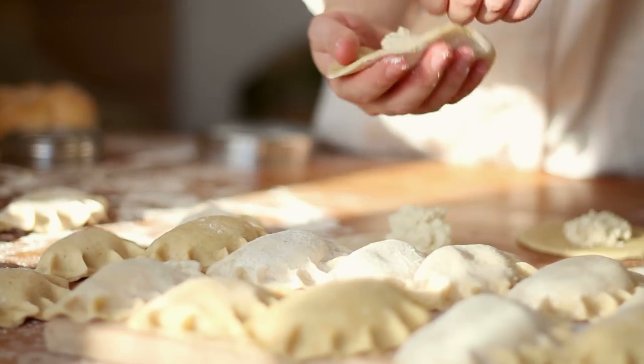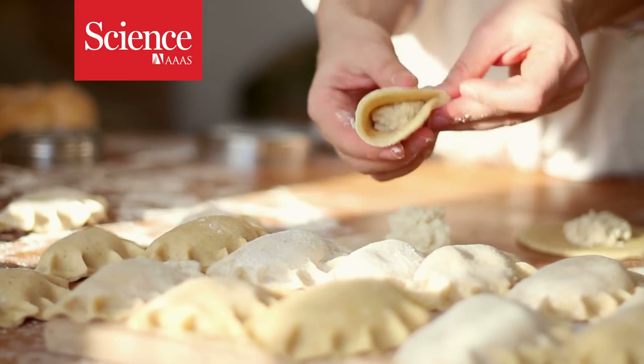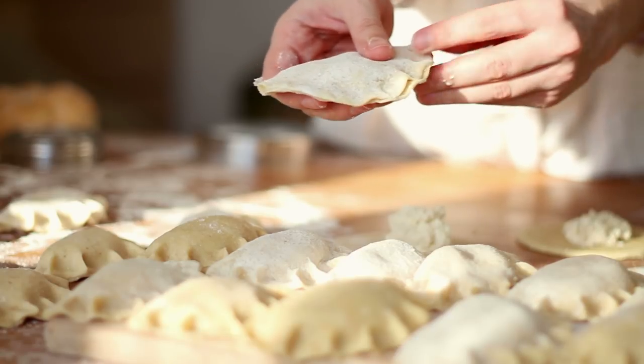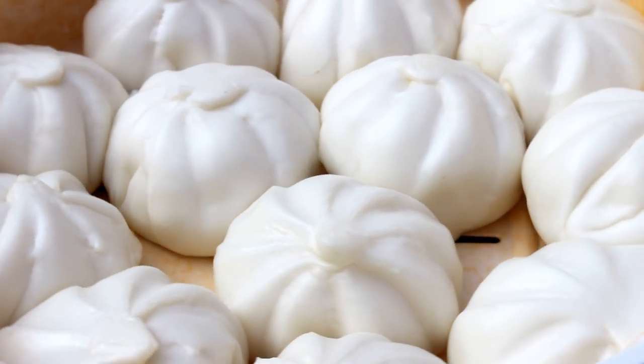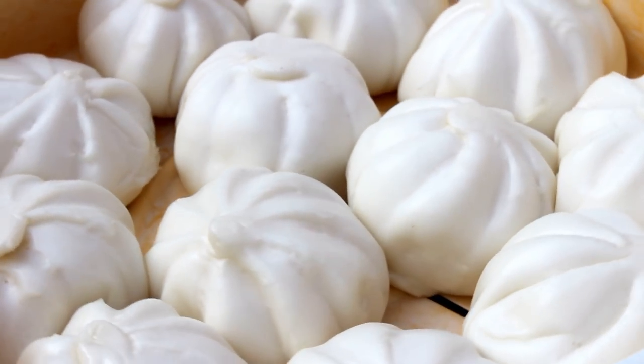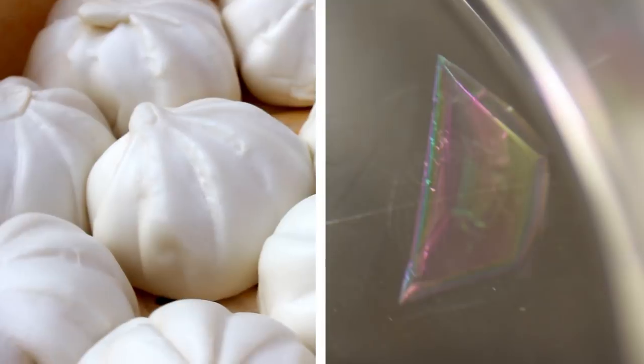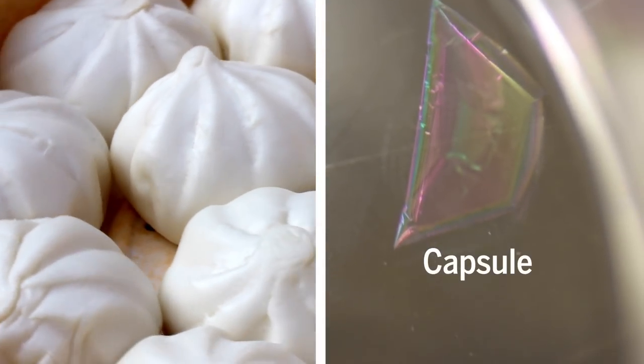One consideration for making a tasty dumpling is maximizing the amount of filling for a given size wrapper without it falling apart. A team of researchers applied the same principle, but instead of making dumplings, they came up with a fast way of making capsules by wrapping a splashing liquid drop with a thin sheet.